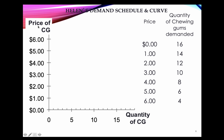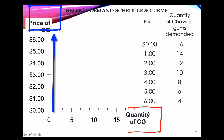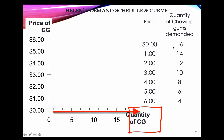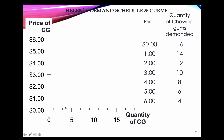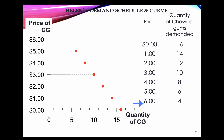We place the price of the good on the y-axis and the quantity on the x-axis. When the price is $0, the quantity demanded is 16, so we start at that point. We plot all these points — in this case, we are looking at Helen's demand — and once we have these points, we have what we refer to as a demand schedule.